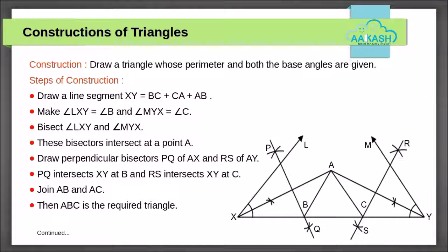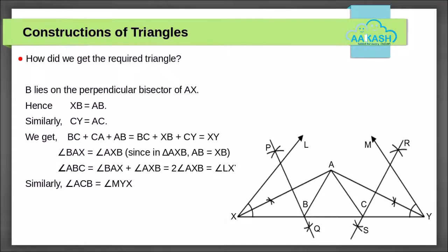Join AB and AC. This triangle ABC is the required triangle. Now let's see how we obtained the required triangle. B lies on the perpendicular bisector of AX, hence XB is equal to AB. Similarly, CY is equal to AC. From this we get BC plus CA plus AB is equal to BC plus XB plus CY, which equals XY.